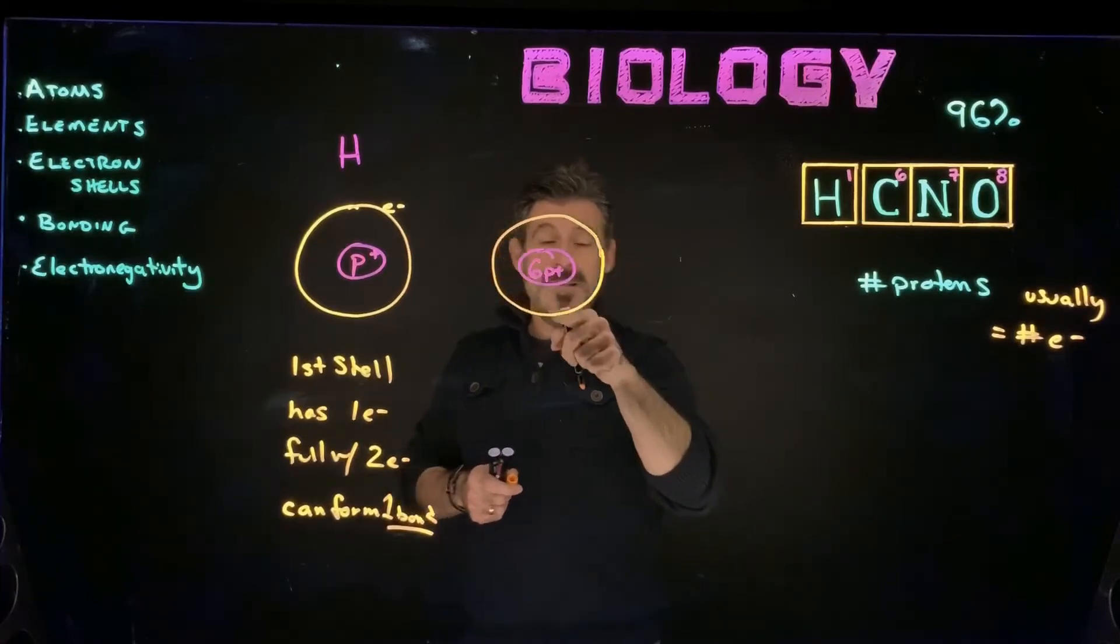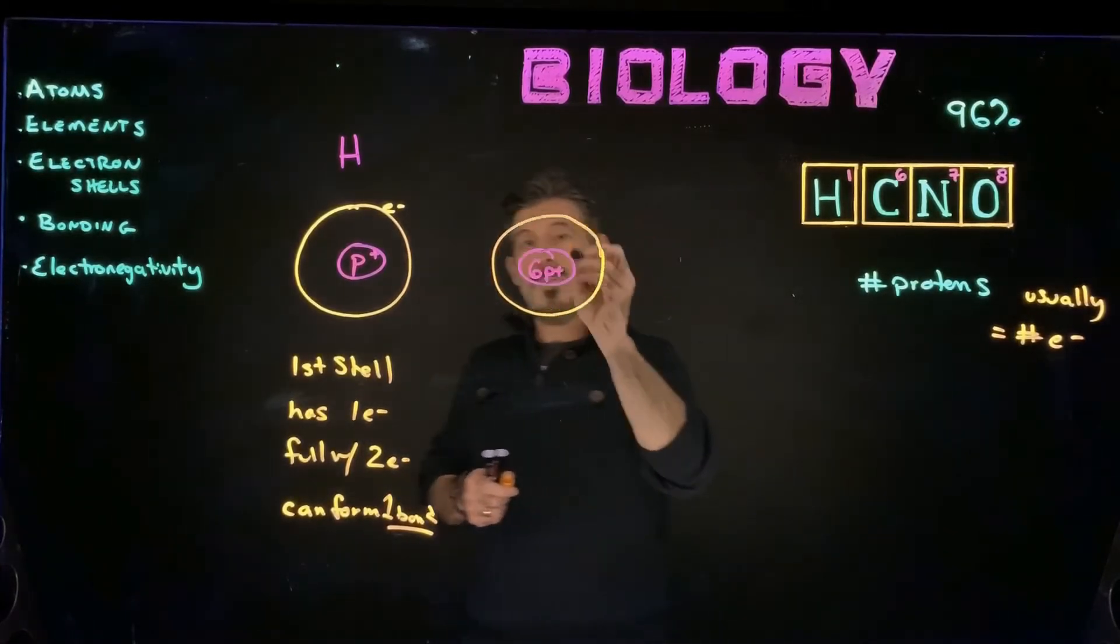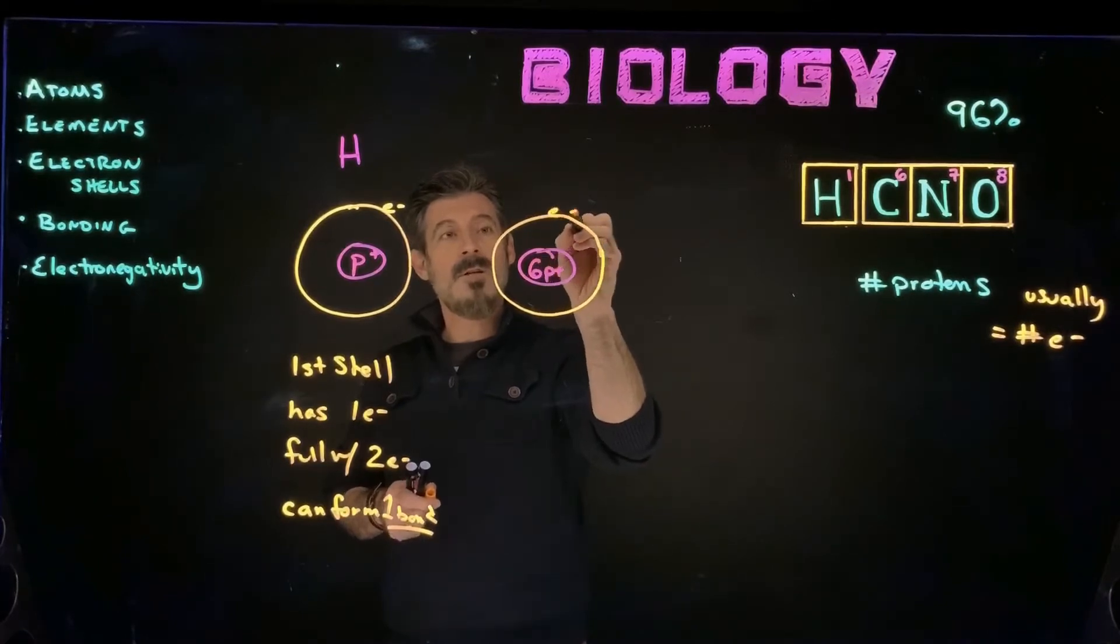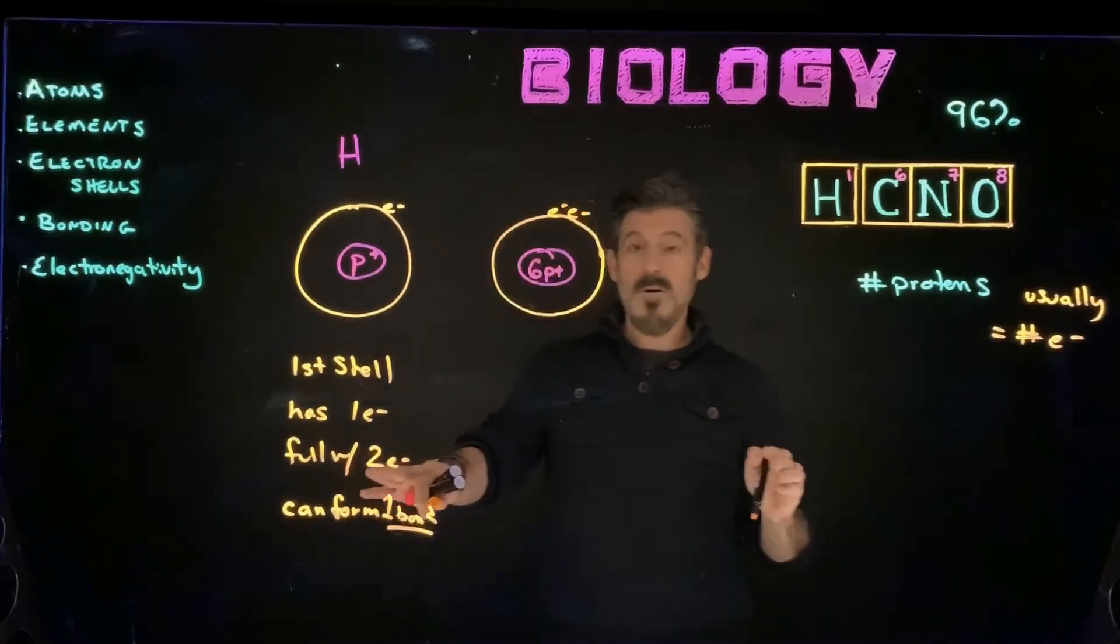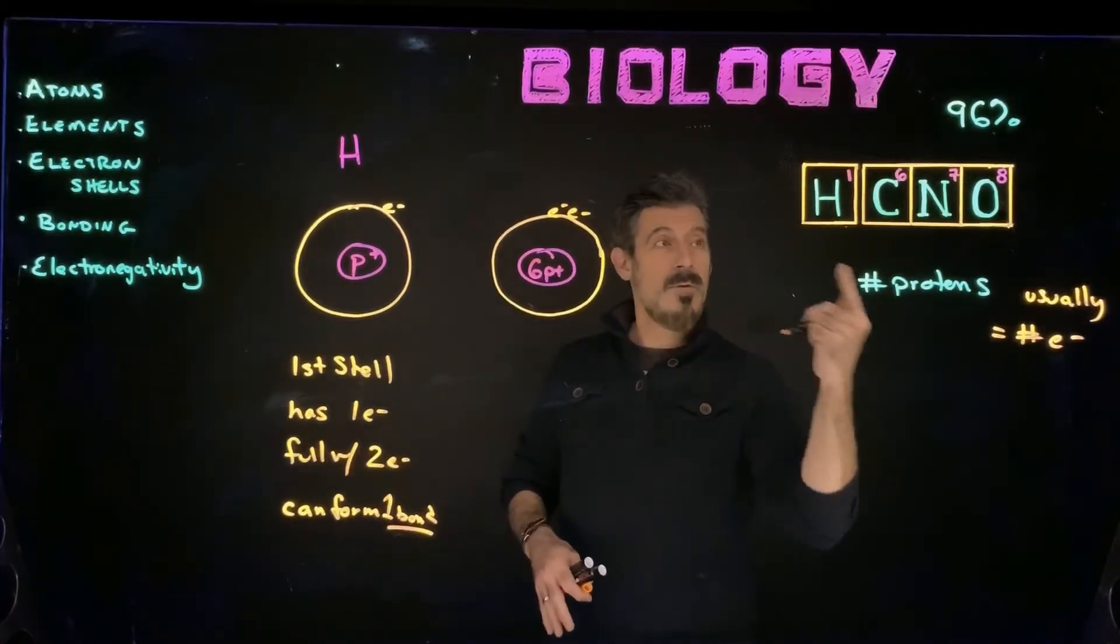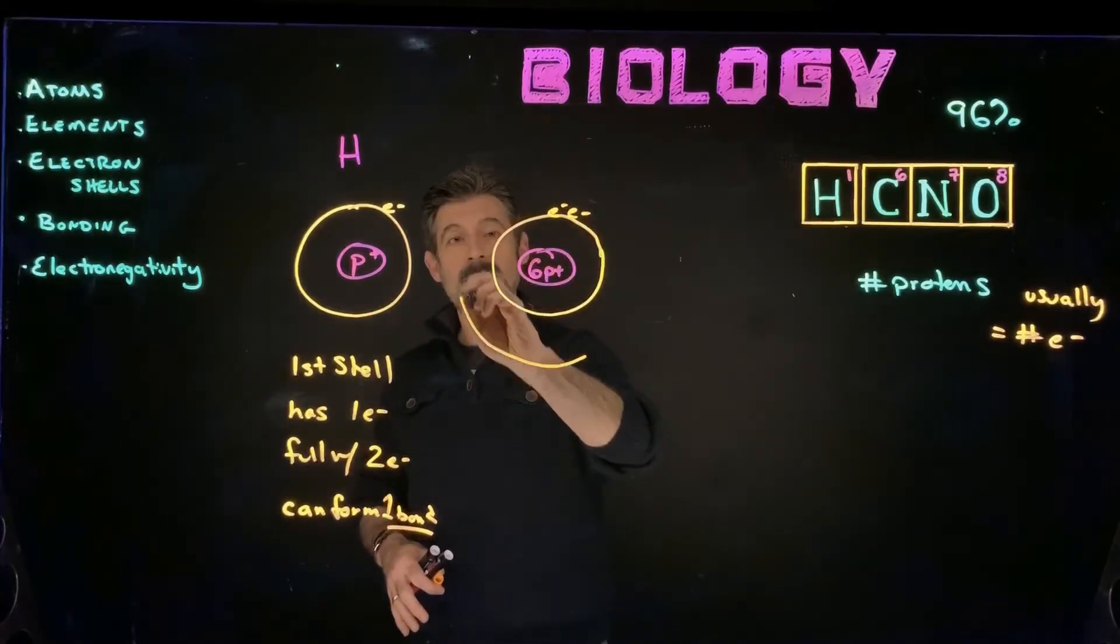So now there's going to be six electrons, six protons, six electrons. So we start to put these into the first shell. There's one, two, and now that's full, full with two electrons. So the other four have to go into a second shell.